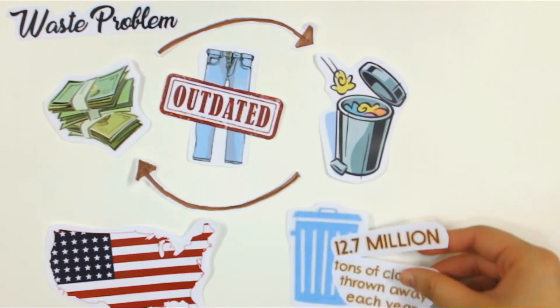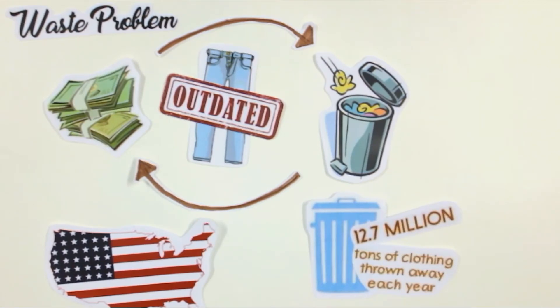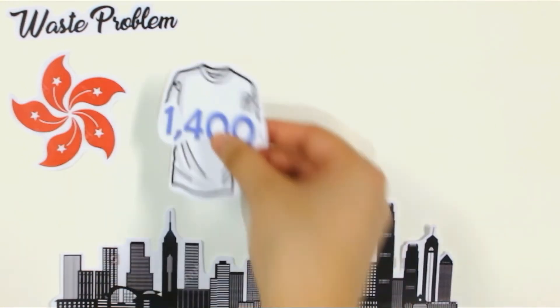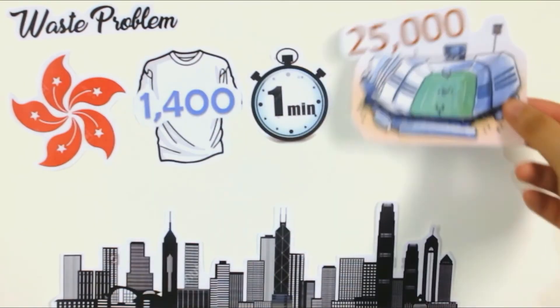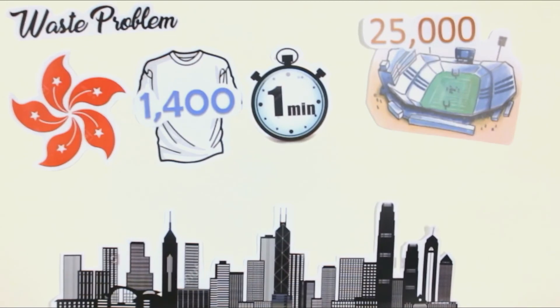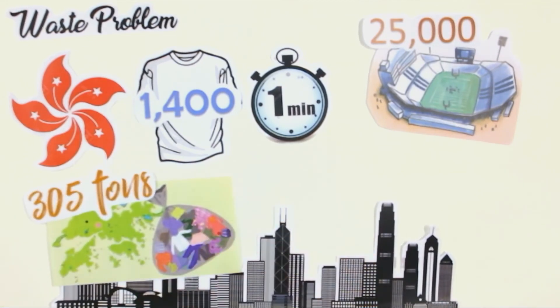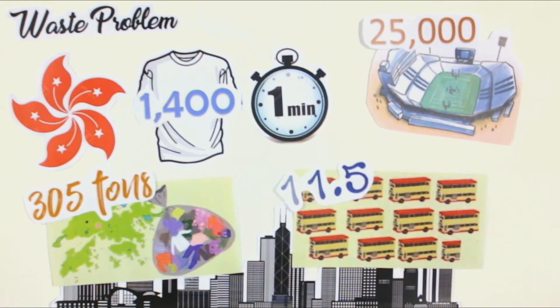In the US, there are about 30 million tons of clothing being thrown away each year. In Hong Kong, we throw 1,400 t-shirts every minute, which is enough to cover 25,000 Hong Kong Stadiums. Every day, there are 300 tons of textile being disposed, and that is the weight of 11.5 double-decker buses. These textile wastes bring along other environmental problems.